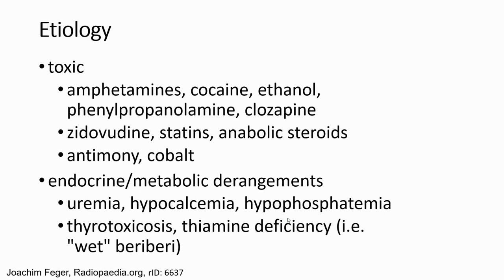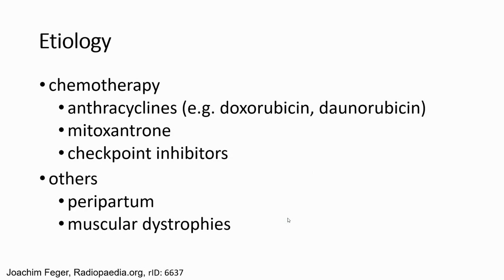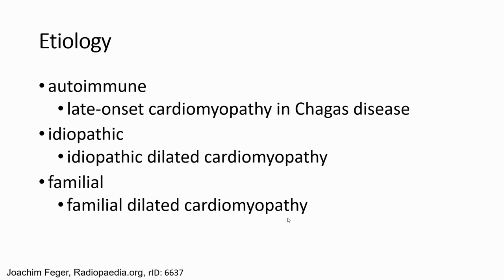Metabolic causes include anemia, hypocalcemia, hypophosphatemia, thyrotoxicosis, and thiamine deficiency. The reticulo-endothelial body can be affected by chemotherapy, and other causes include pericarditis or muscular dystrophy. It can also be related to autoimmune disease. Sometimes we cannot find any cause, so we call it idiopathic, and sometimes it is due to familial causes.